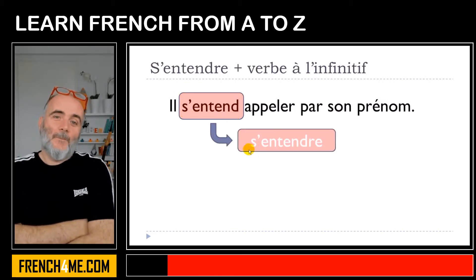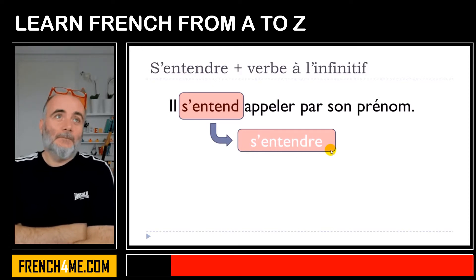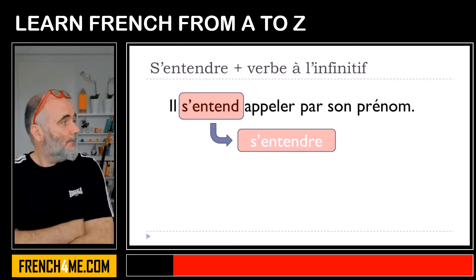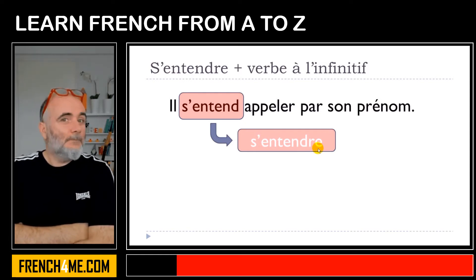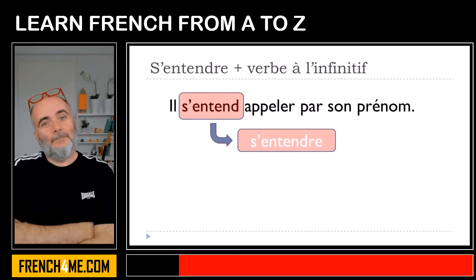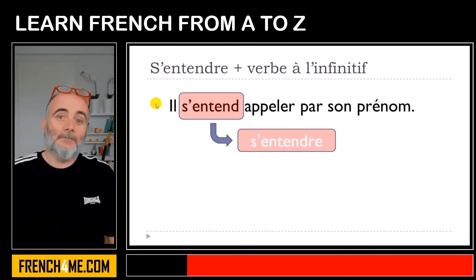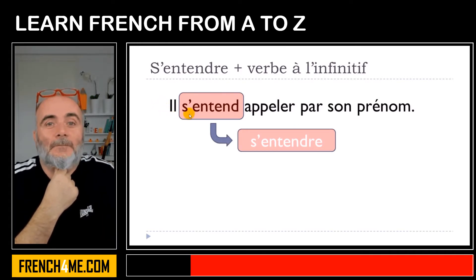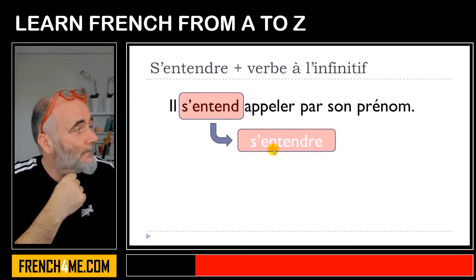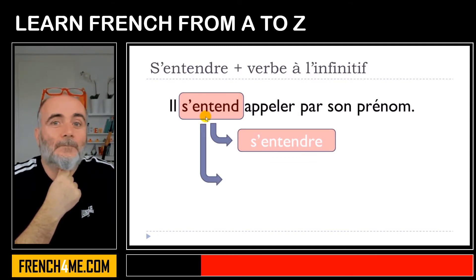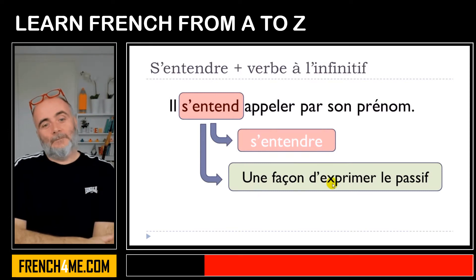S'entendre is the infinitive form. If you would like to translate it directly, it means 'to hear oneself' or 'to listen to oneself.' But it doesn't really make any sense if you start to directly translate the sentence with this concept of 'oneself' — it's quite strange.